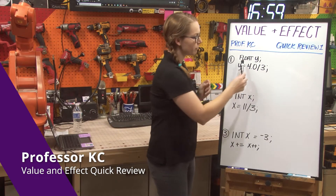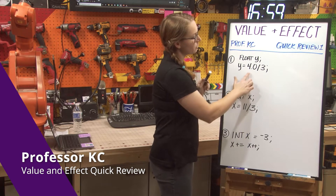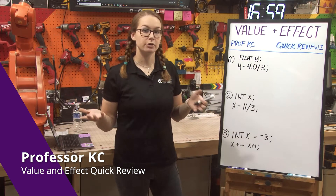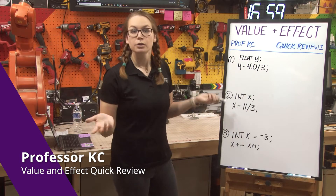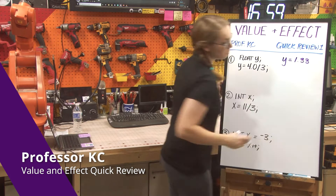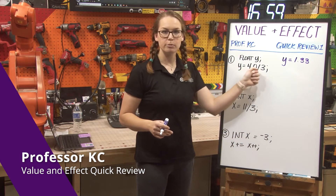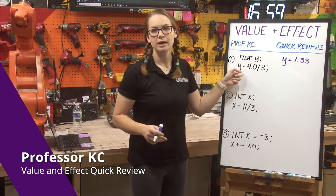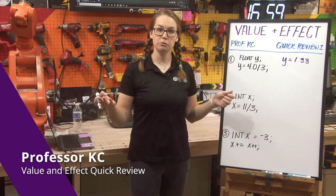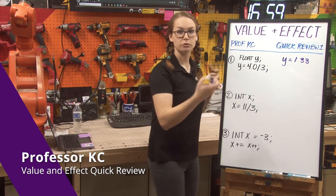If you look, we have declared float y as a floating point decimal, and we've set y equal to 4.0 divided by 3. If you were to plug 4.0 divided by 3 into your calculator, what would you get? You'd get 1.33 — 1.33 repeating, technically. We have this 1.33 repeating being assigned to y. And y is a floating point number, and 1.33 is a floating point number, so we know that those two things are fine, and we can actually assign 1.33 to our floating point number y.